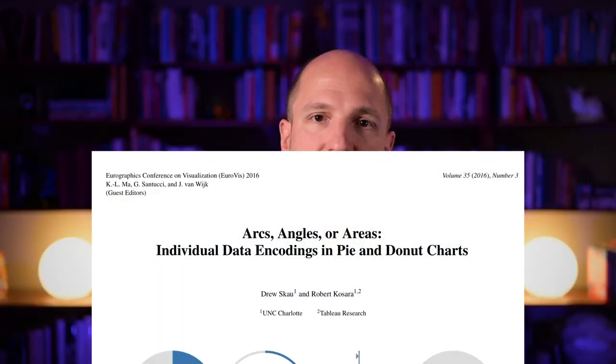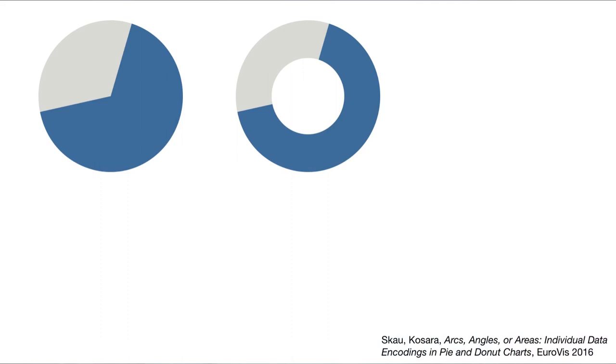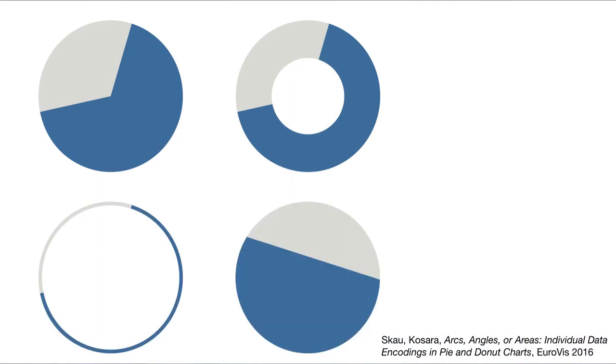My former PhD student Drew Scow and I did some studies on this a few years ago, where we had people look at charts designed to tease apart the different cues. We showed people pie charts and donut charts, and also what we call the arc-only chart, the area-only chart, and an angle-only chart — which had no area and no arc. We found that people did much better with the arc and area charts than with the angle chart. So we established that angle is unlikely to be the visual cue people use to read these charts. But between arc and area, we weren't able to tell.